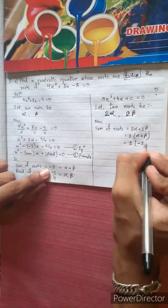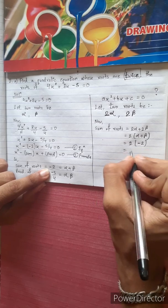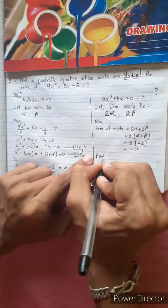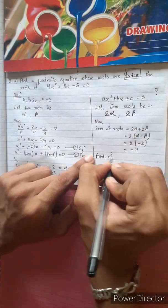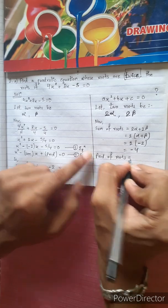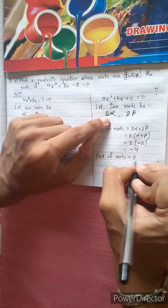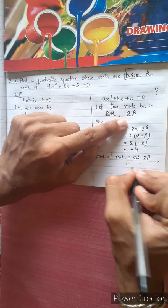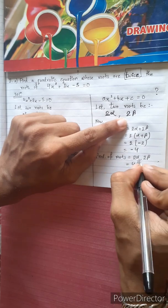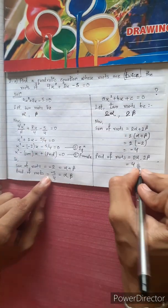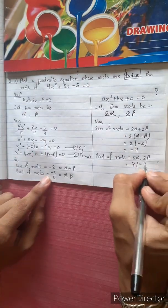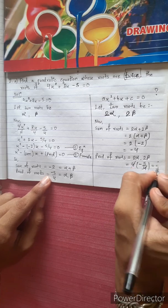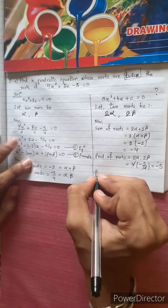Sum of new roots is minus 4. Product of the new roots: 2 alpha into 2 beta equals 4 times alpha into beta equals 4 times minus 5 by 4 equals minus 5.